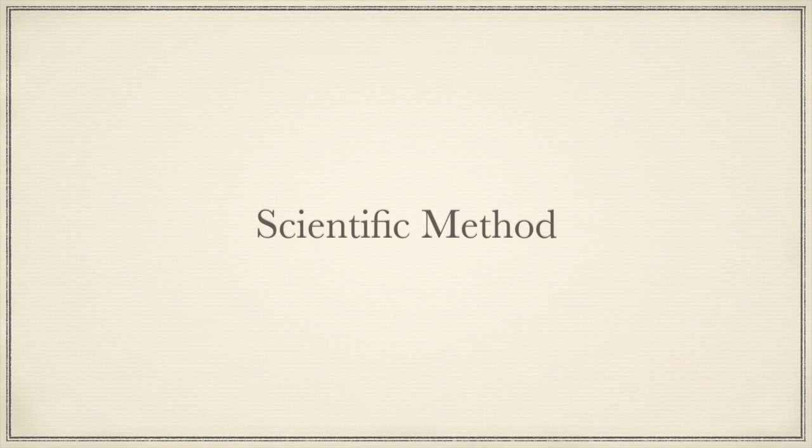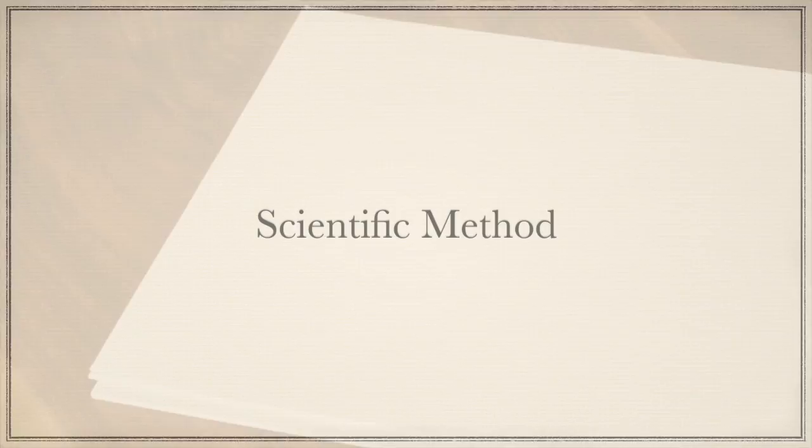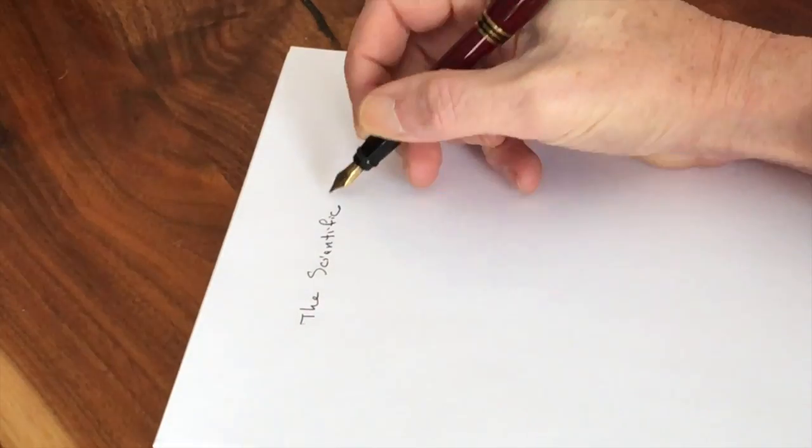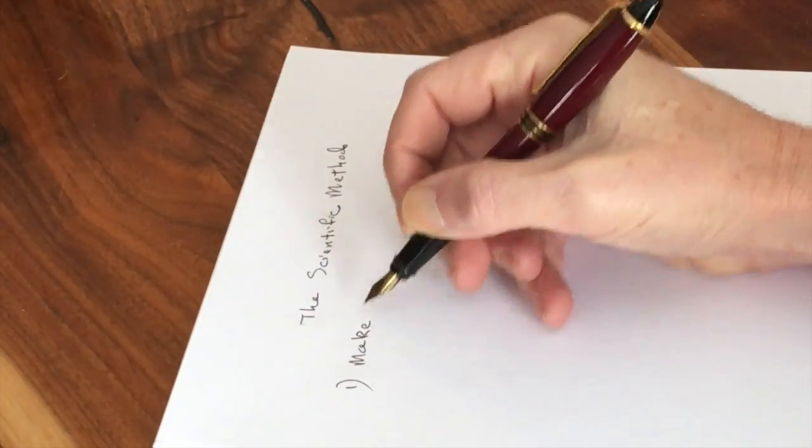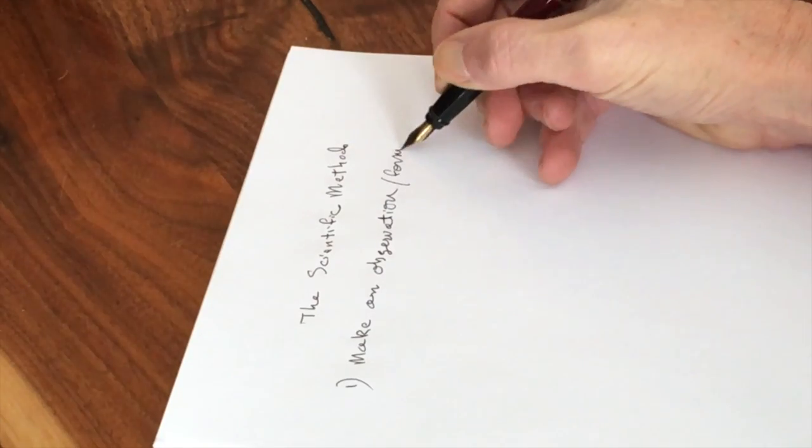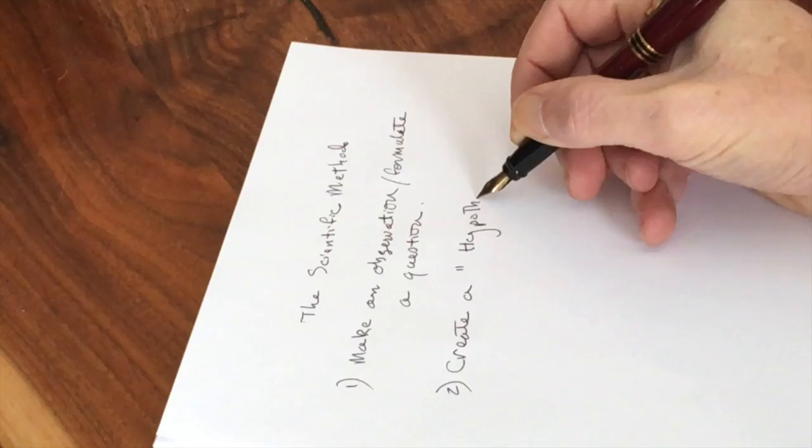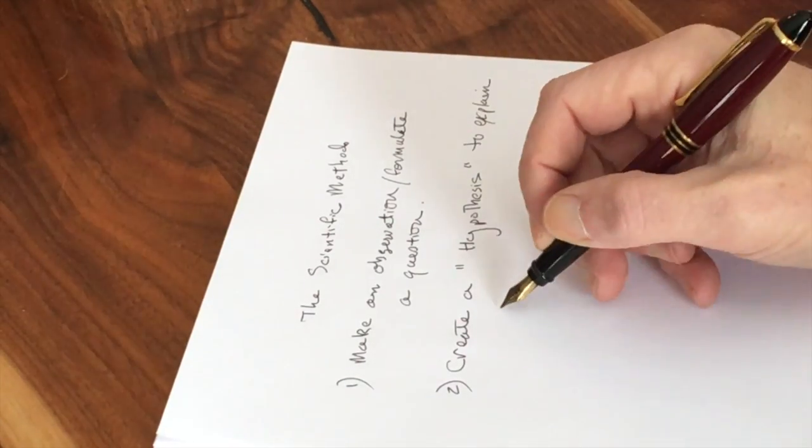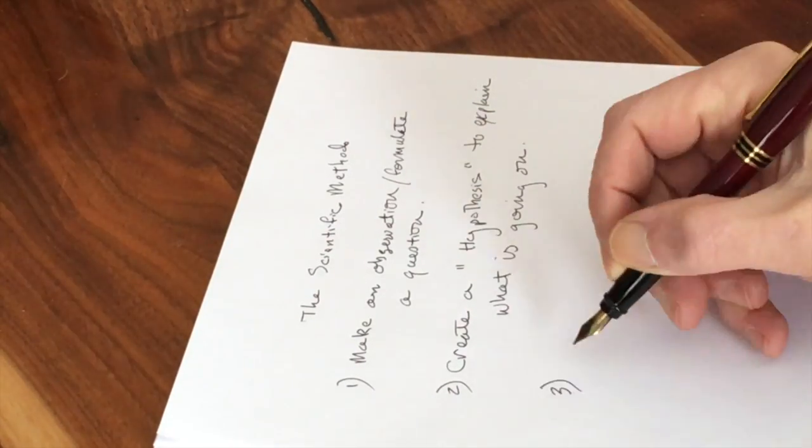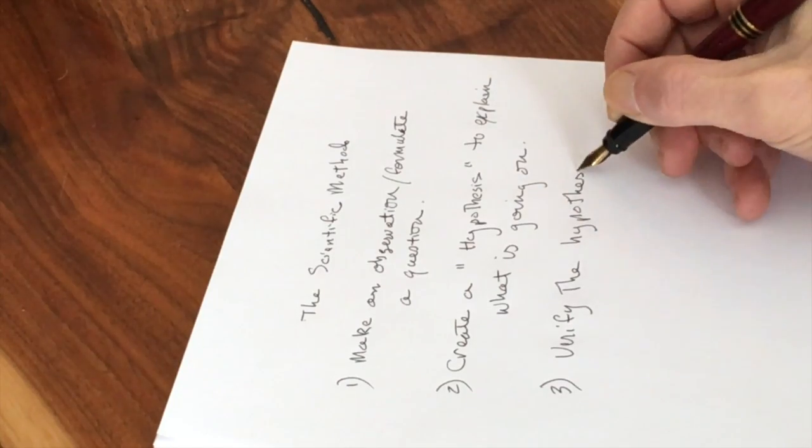The way that we do experiments in science is following something called the scientific method. Now the scientific method is just that, a method. While there's no particular way of doing it or requirement of a particular step, it does follow some very basic principles. And I'd kind of like to go over those before we show how Cavendish applied those principles to his experiment.